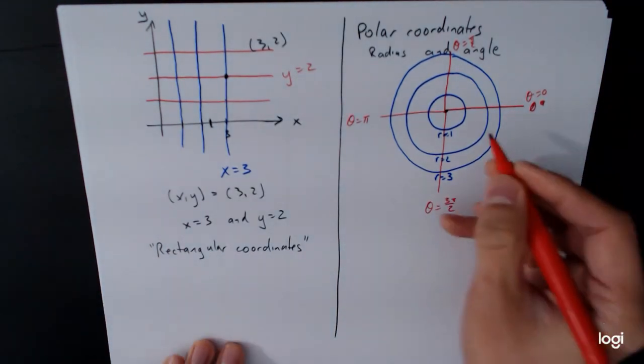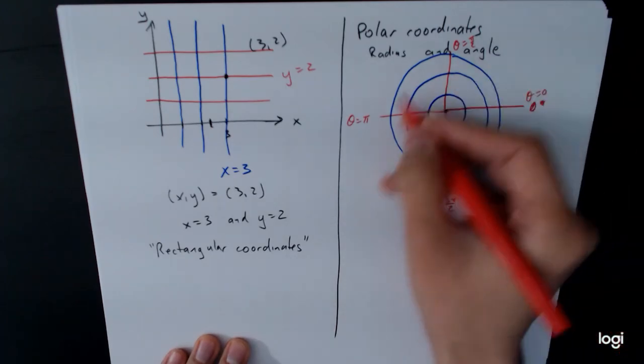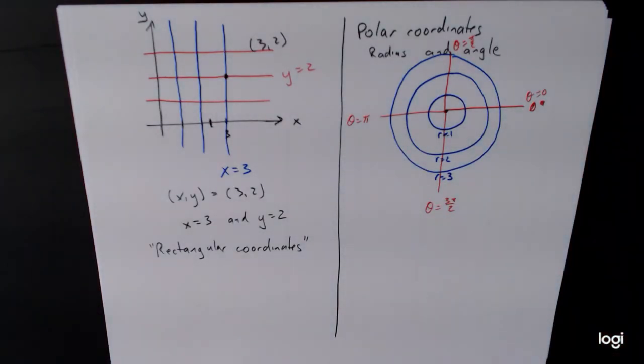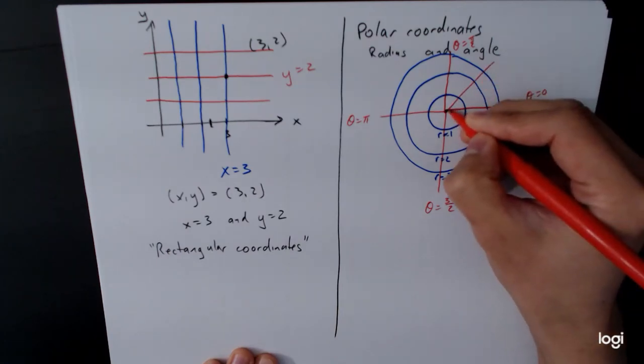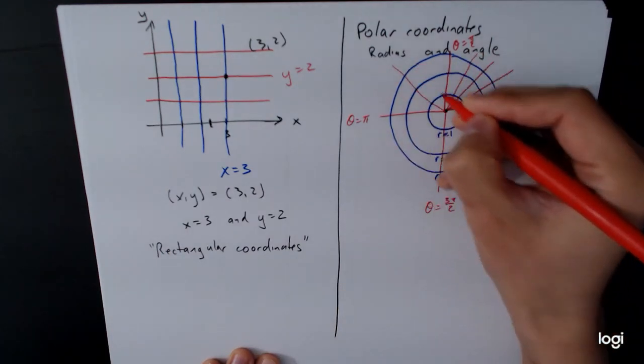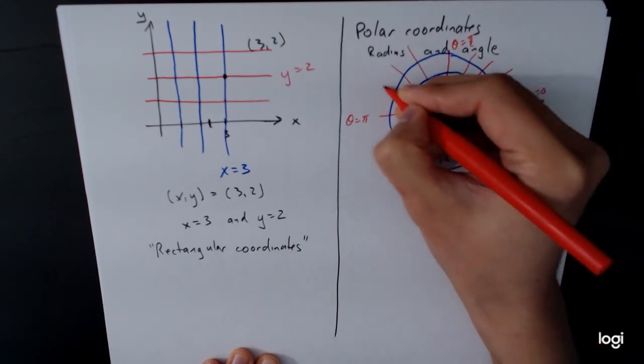And then we can also go around and have theta equals 2 pi, theta equals 4 pi, 6 pi, and so on. So we can keep wrapping around over and over and over again. And then we have all the other angles, which I'm not going to fill in, but these are the angles that we get our known angles from the unit circle.